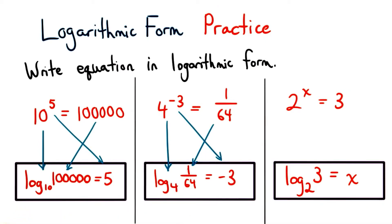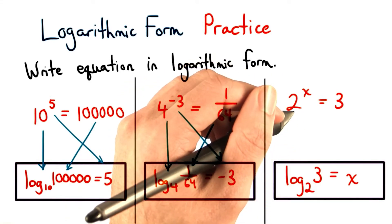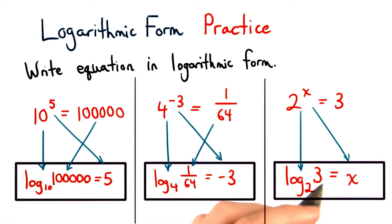And finally, for the last one, we use the same technique. Our base of our logarithm is 2, since this base is 2. The result of our logarithm is x. This is the exponent. And we're taking log base 2 of the number 3 to get x.